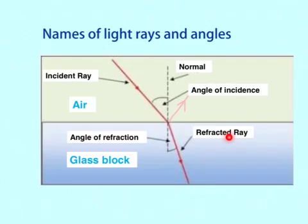There is a bit of reflection as well. There is a small reflected ray. Not that clear. This angle, of course, is the angle of incidence. That angle is the angle of refraction. This angle here is the angle of reflection.